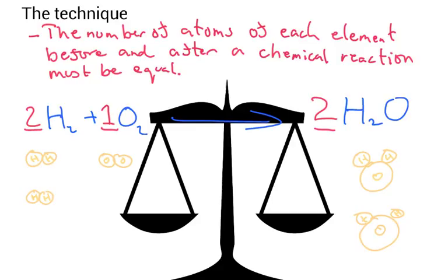Just remember, the number of atoms of each element beforehand must equal the number of atoms after the chemical reaction. Let's go through some examples and you'll get it pretty soon.